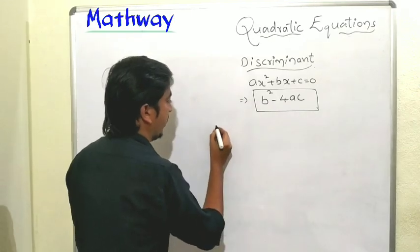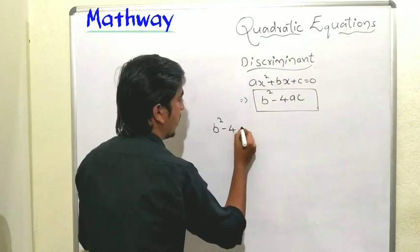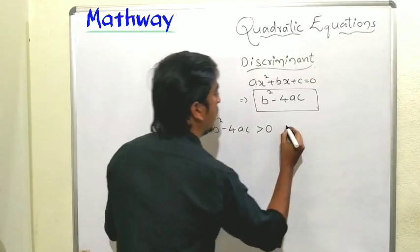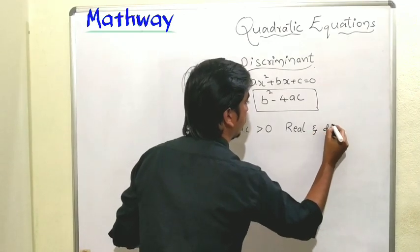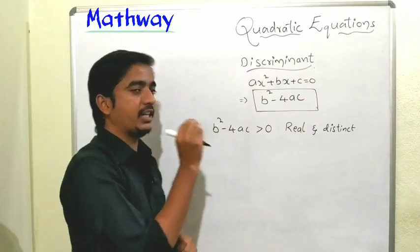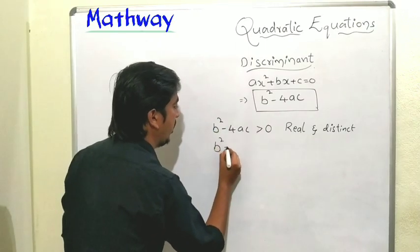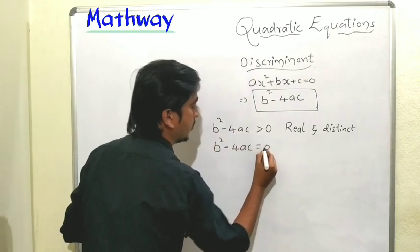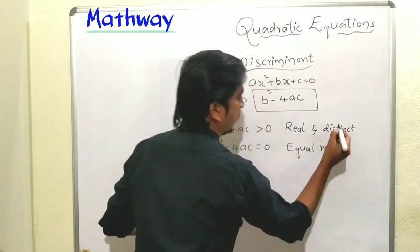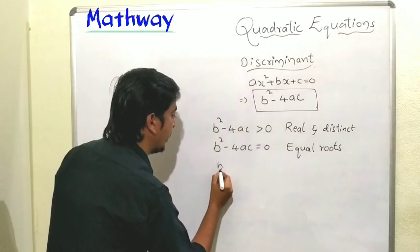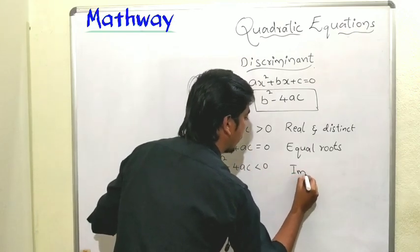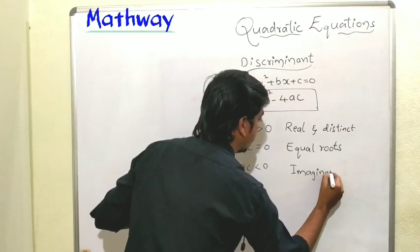If the discriminant b² - 4ac is greater than 0, then the equation has real and distinct roots. If the discriminant b² - 4ac equals 0, then the equation has equal roots — meaning both roots are the same. If the discriminant b² - 4ac is less than 0, then the equation has imaginary roots.